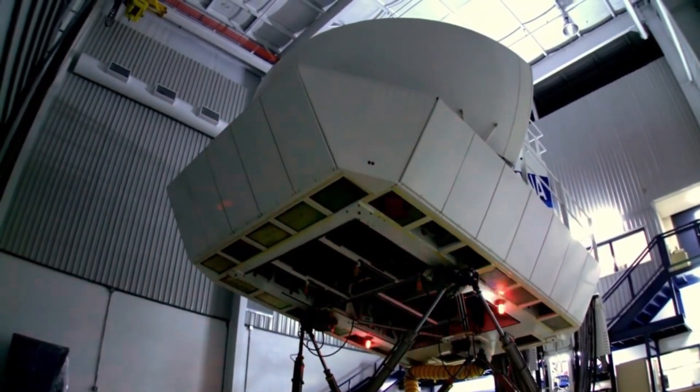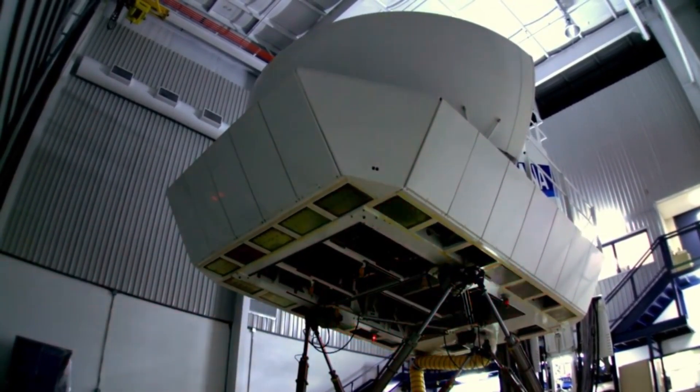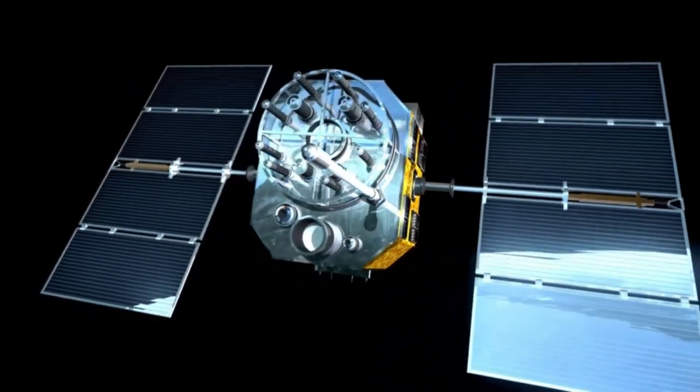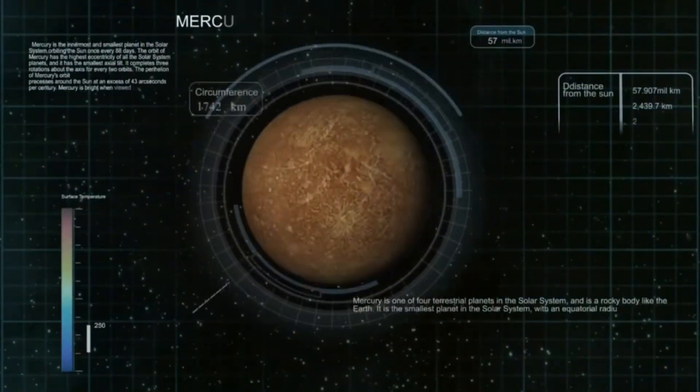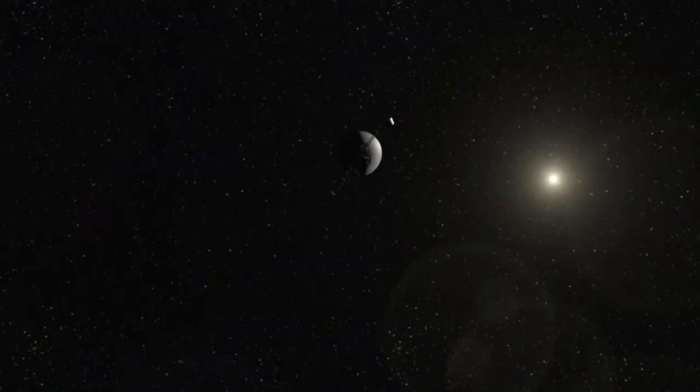While such proximity would typically lead to a scorched surface, Proxima Centauri is much smaller and dimmer than the Sun, which means the planet experiences far less intense radiation. On Proxima B's surface, the star would appear as a dull red orb about three times the size of the Sun as seen from Earth. Because Proxima B is so close to its star, it resides within the star's habitable zone where conditions could be suitable for liquid water to exist.